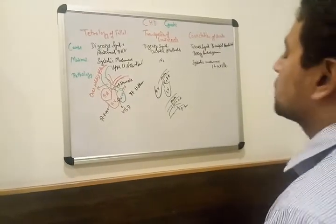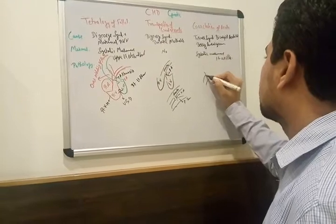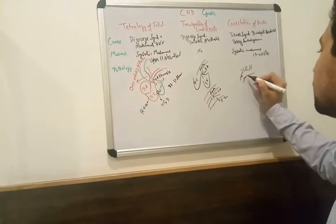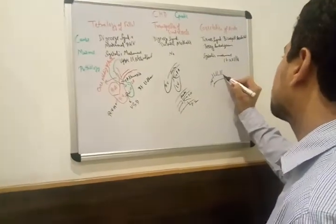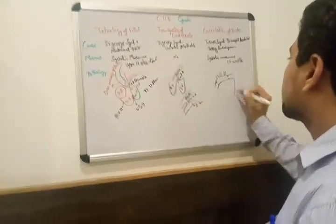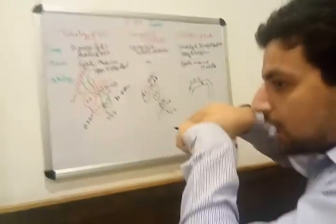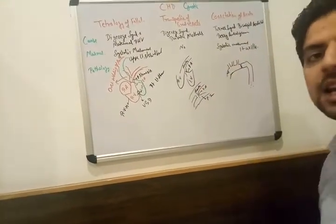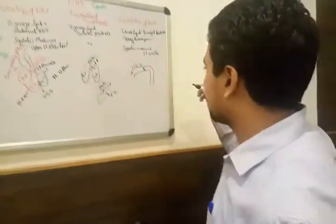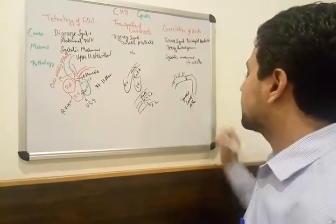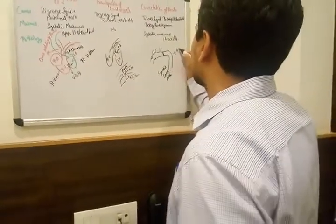Coarctation of aorta: if there is coarctation before the branches from the aorta, there is less chance of survival. If coarctation is distal — from here to here — there is more chance of survival, but the lower extremities have stenosis due to the coarctation, meaning less blood goes to the lower extremities. What happens is the pressure inside the upper vessels is higher, while in the lower vessels going to the lower extremities, the pressure is less. This causes cyanosis in the lower side and high blood pressure in the upper extremities.